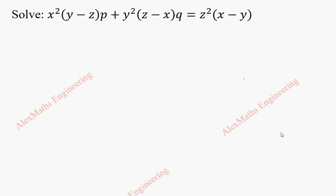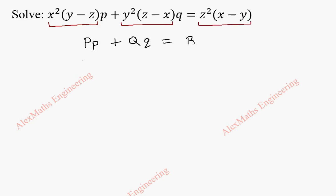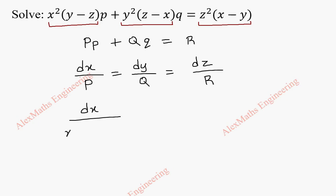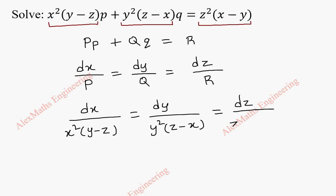Hi students, this is Alex. In this video we are going to solve the given partial differential equation. This is of the form P·p + Q·q = R. From this, capital P is the first term, capital Q is the second, and capital R is the third. To get the solution we have to solve dx/P = dy/Q = dz/R. We replace P, Q, R: dx by x² (y−z) equals dy by y² (z−x).